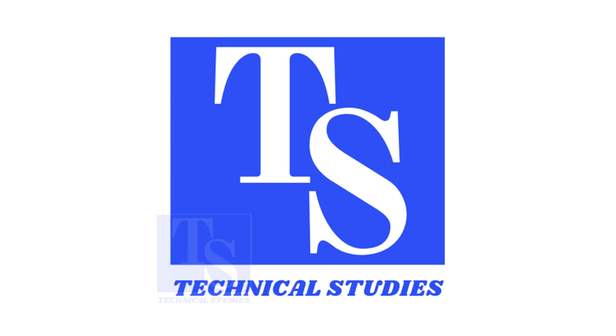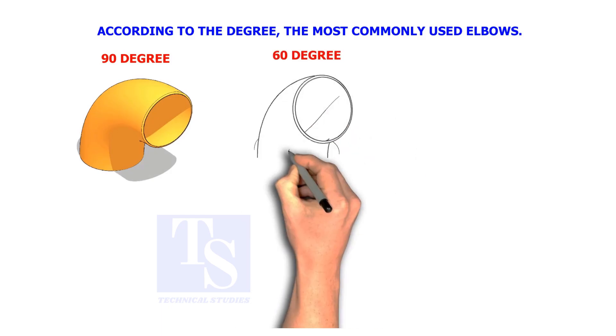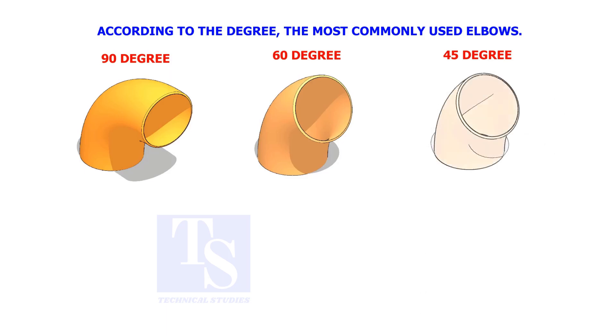Welcome to Technical Studies. The most commonly used elbow degrees in piping are 90, 60, 45, 30, and 22.5 degrees. In this video, I will show you how to calculate the elbow center in a fast method.